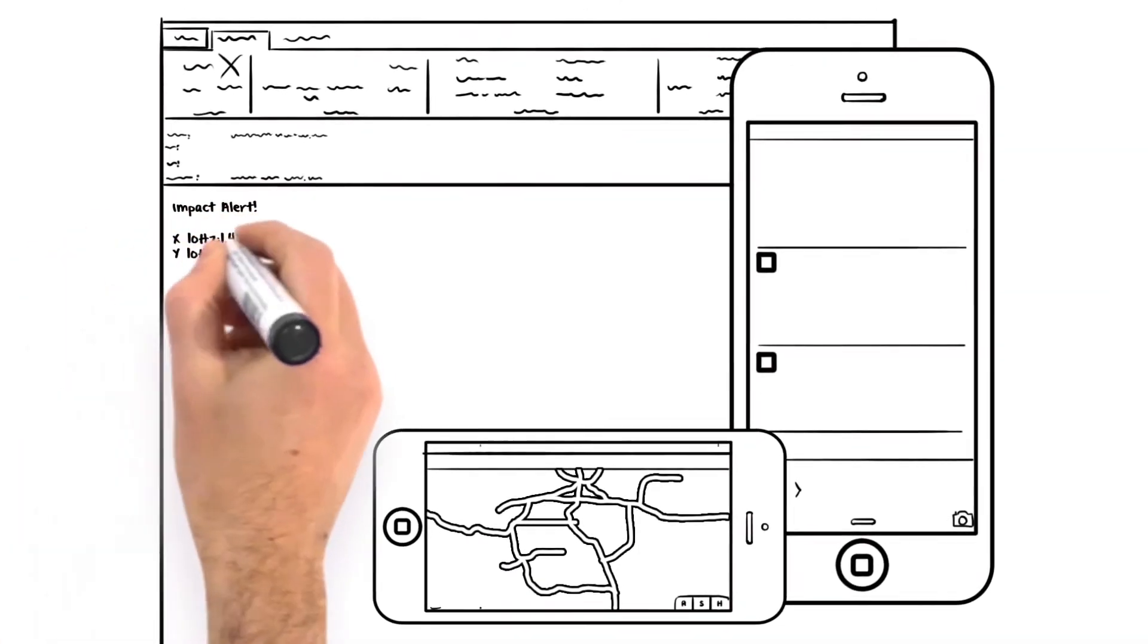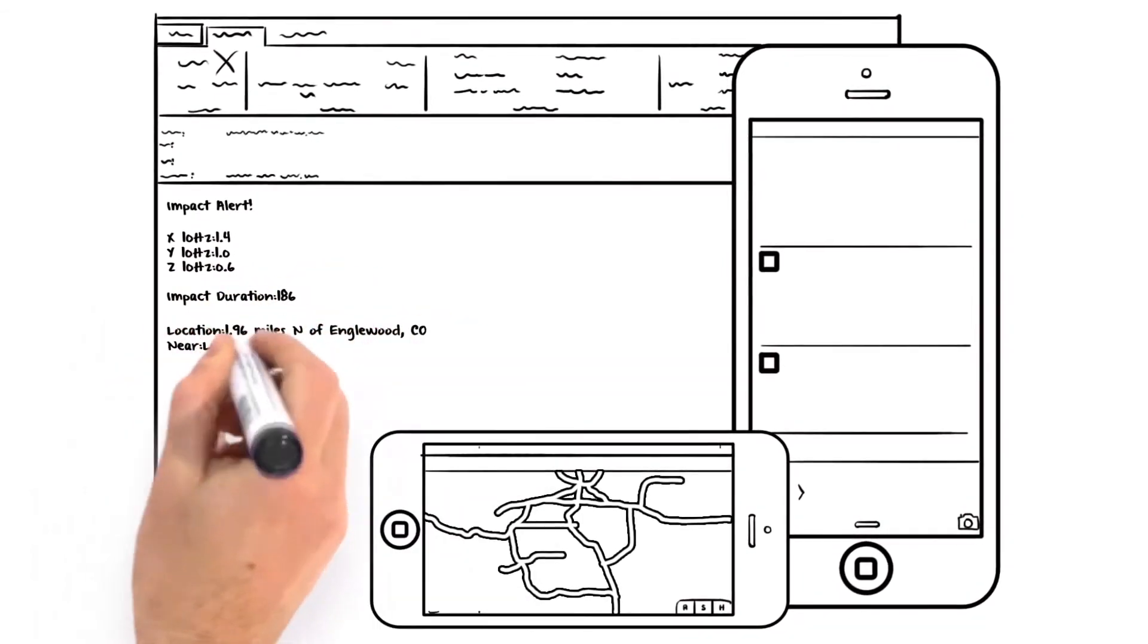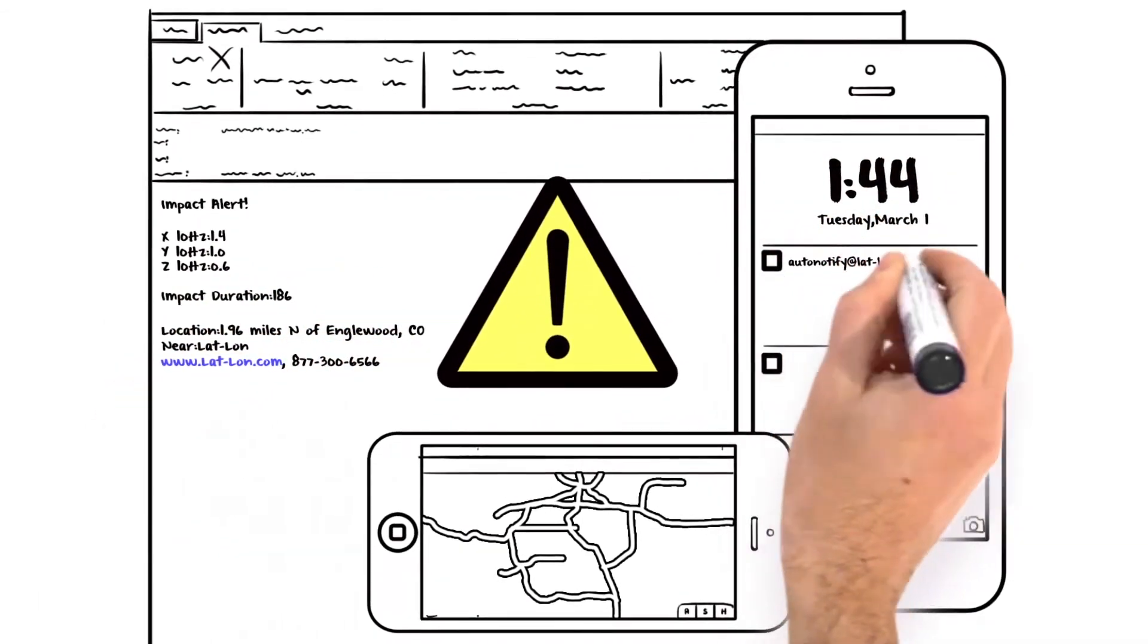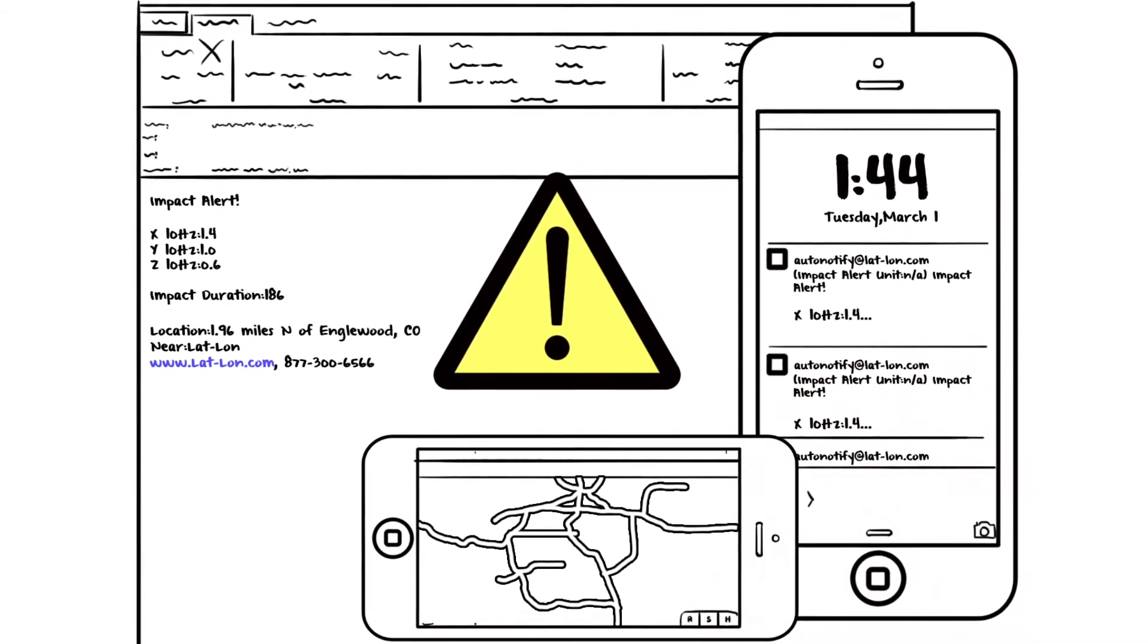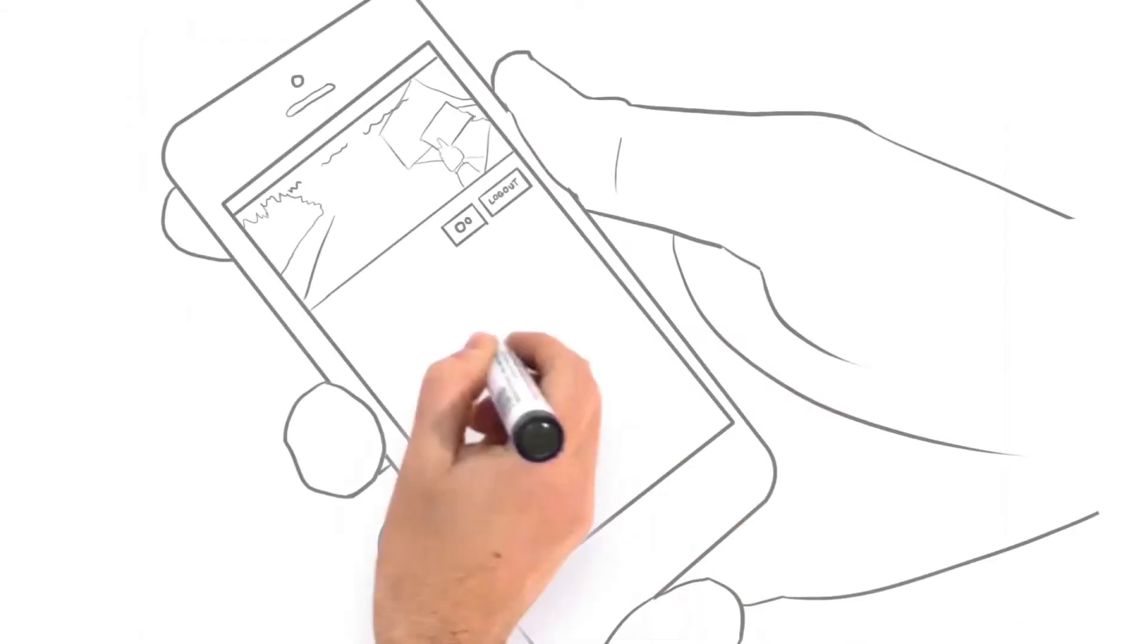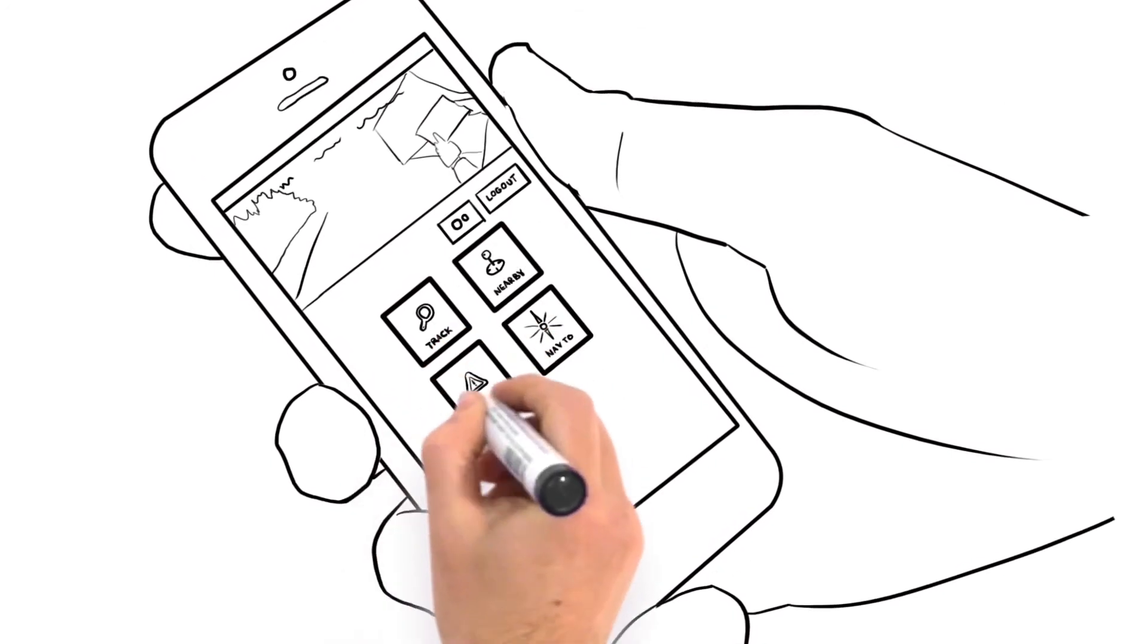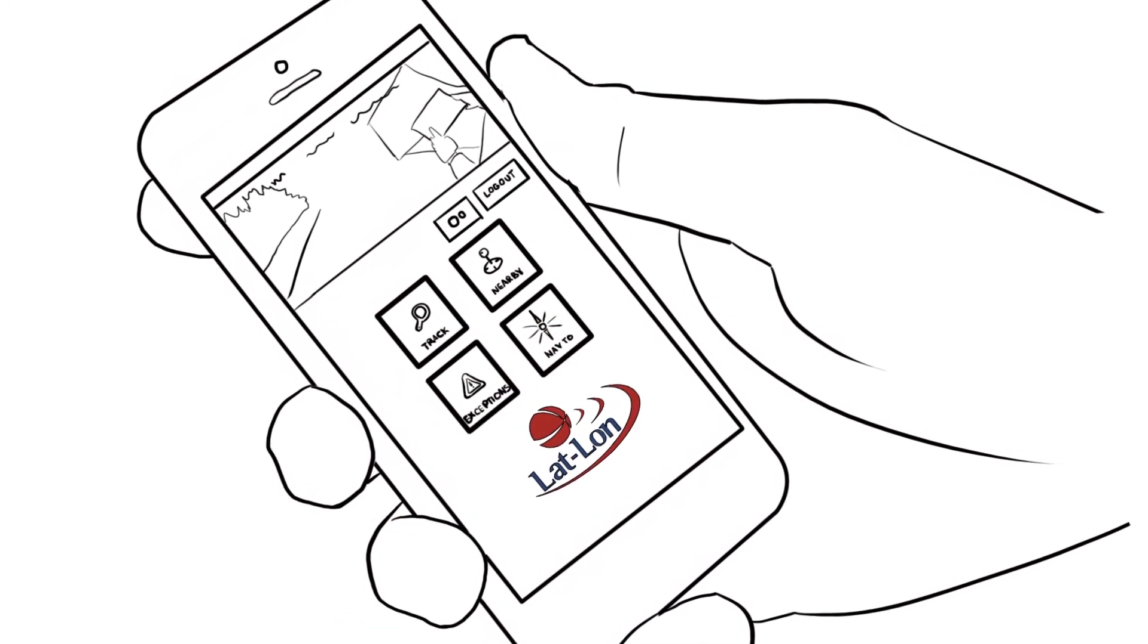Plus, Susan and William can set up alerts if anything happens to the cargo, or when it arrives at its destination, email or text alerts, or simply check status on the LATLON app. William loves having the answers at his fingertips, no matter where he is or what he's doing.